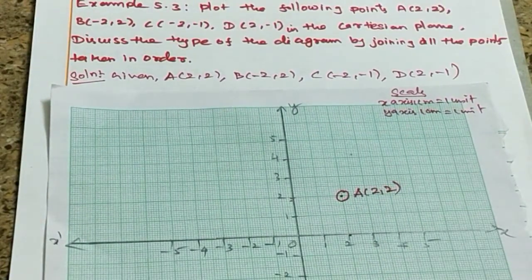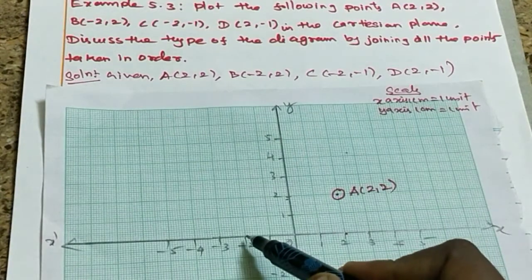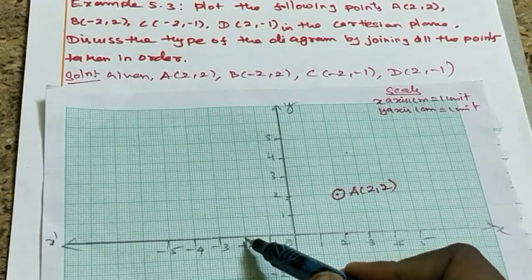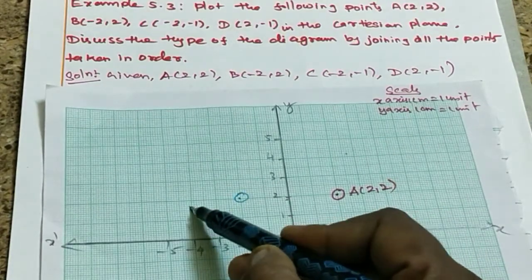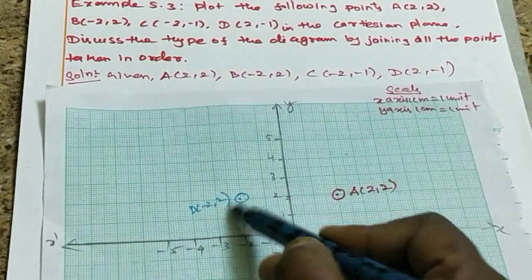What is B point? Minus 2,2. That lies on the second quadrant. So minus 2,2, this is B point.